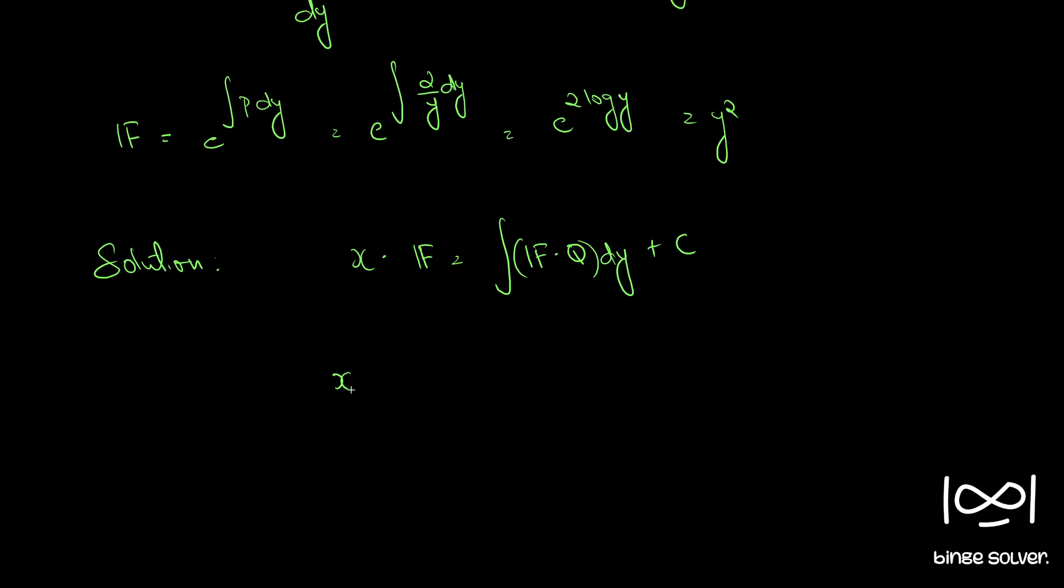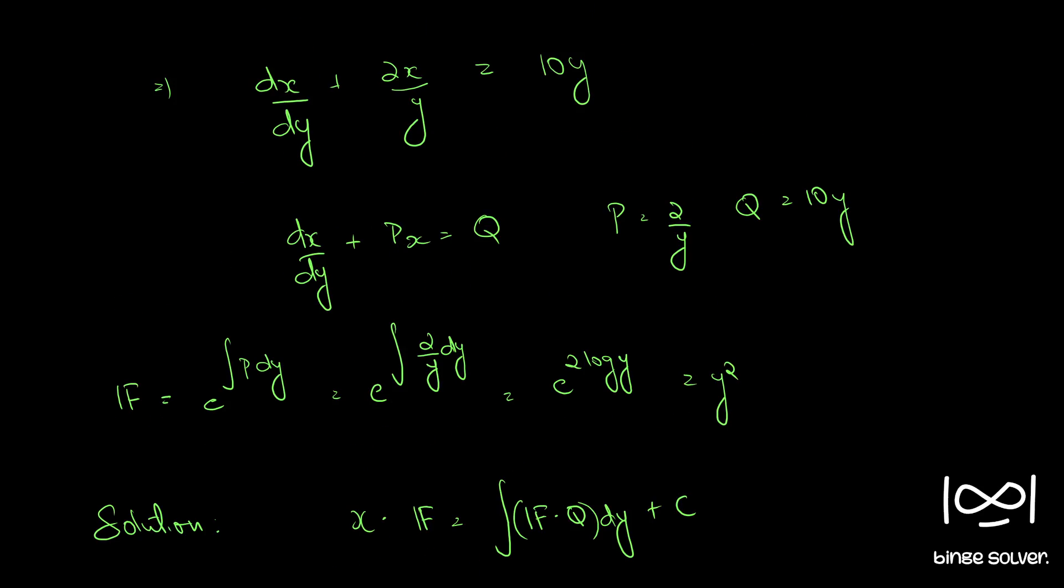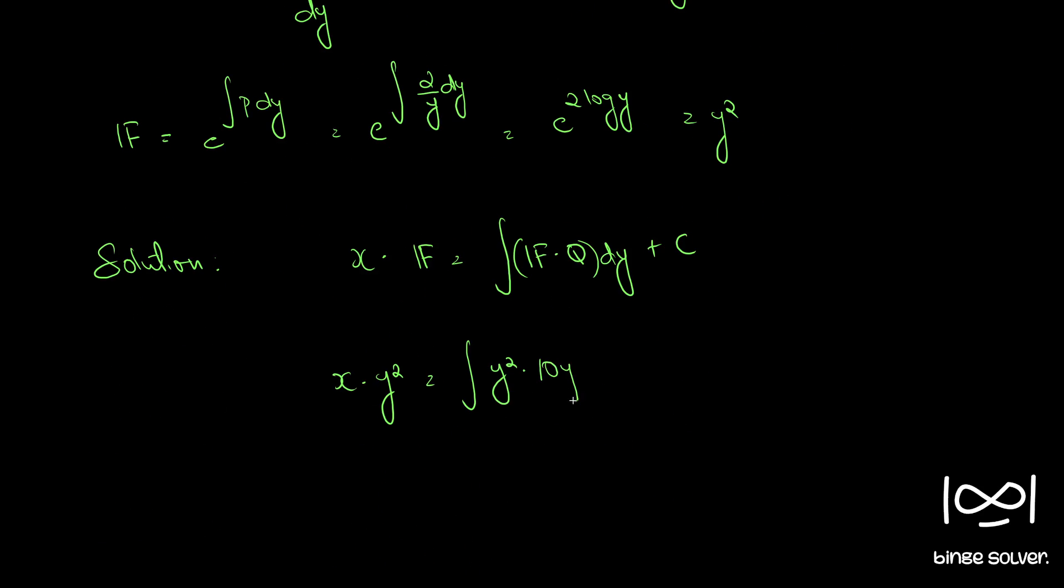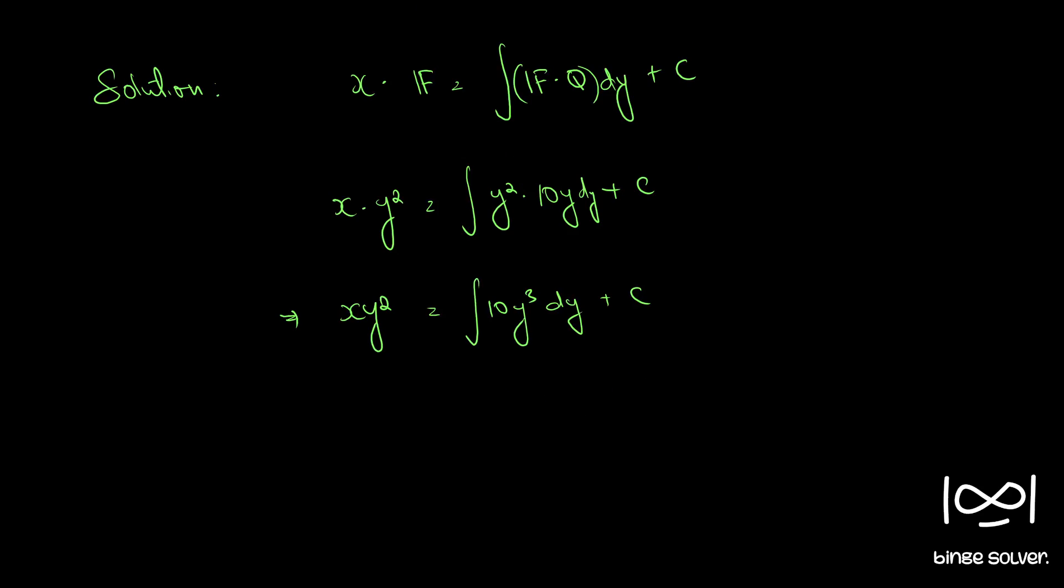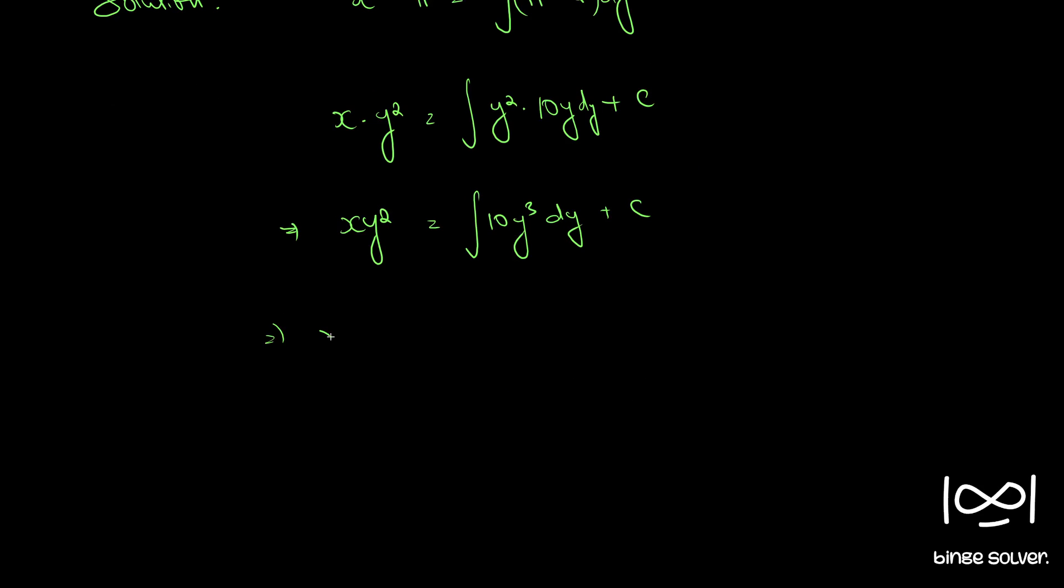So we have x · y² = ∫y² · 10y dy + c. We have 10y³ dy plus c. So xy² = 10y⁴/4 + c.